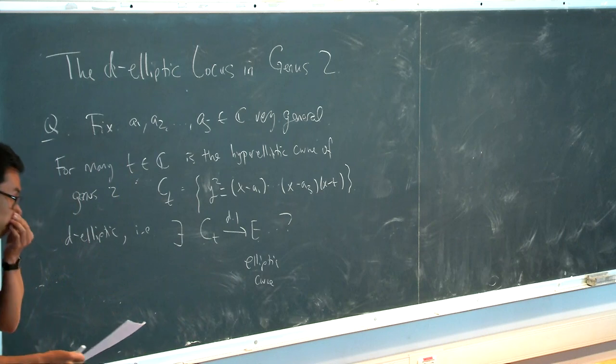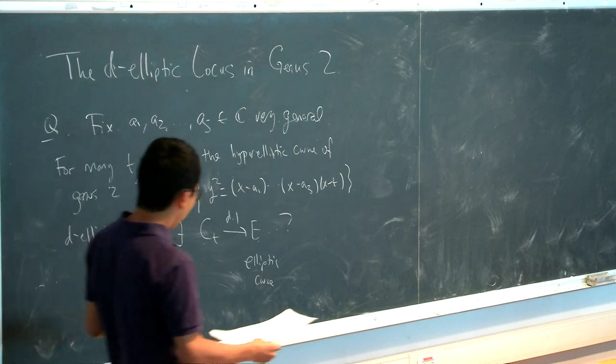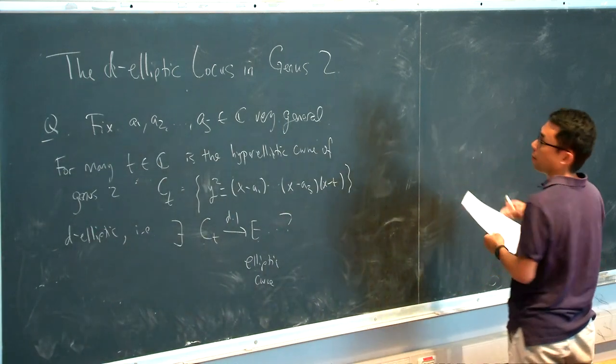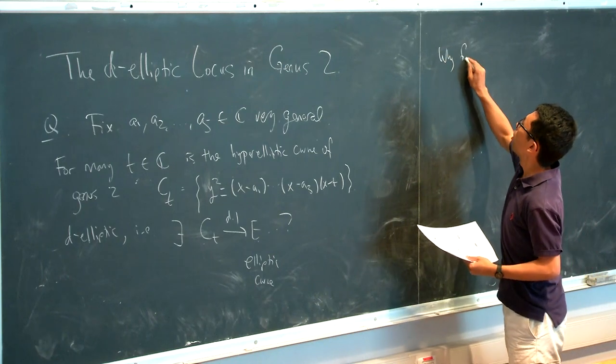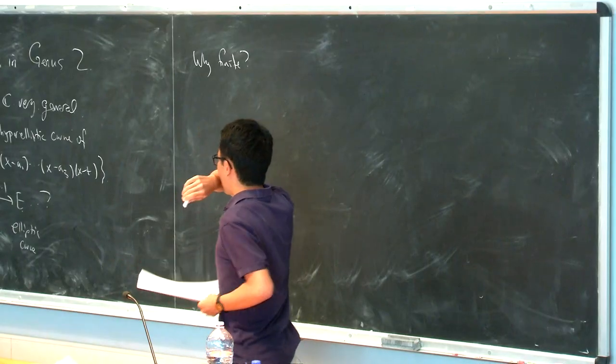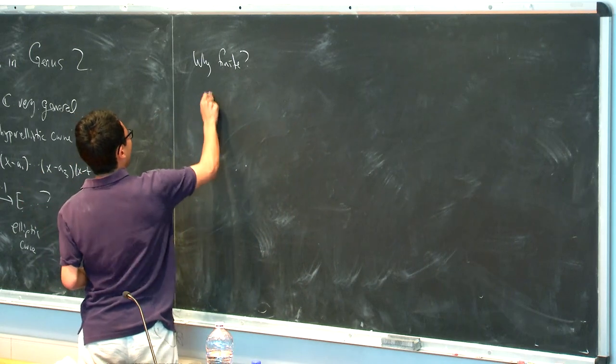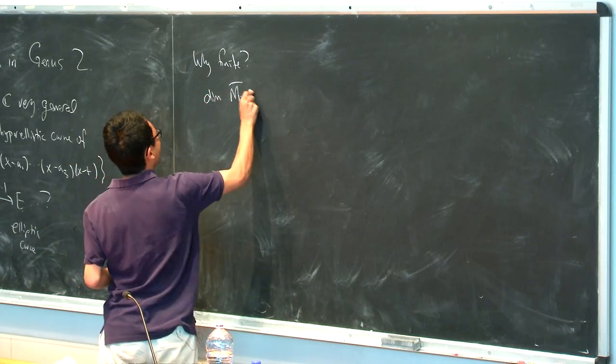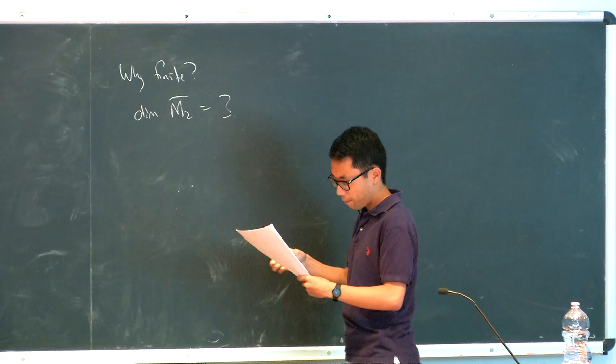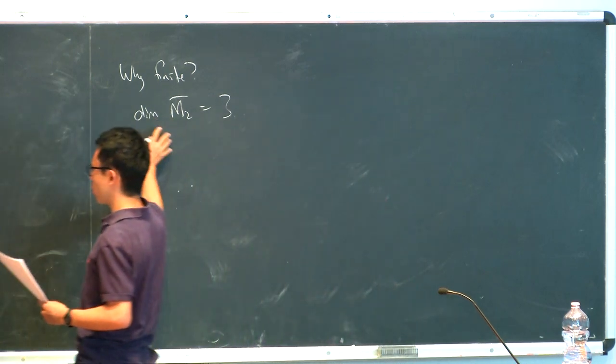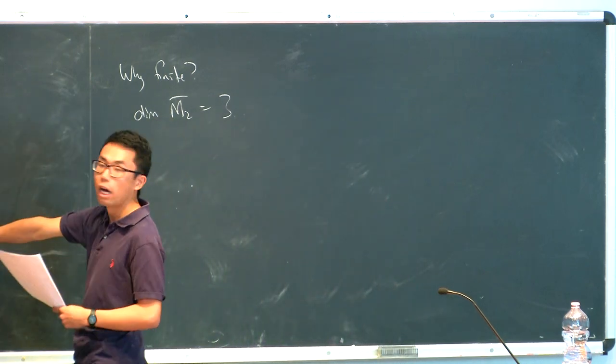So E is an elliptic curve. Okay, so the first sanity check is why would you expect this answer to be finite? So why finite? Well, as we know, there's a three-dimensional family of genus 2 curves. And so among these genus 2 curves, how many of them have this property?